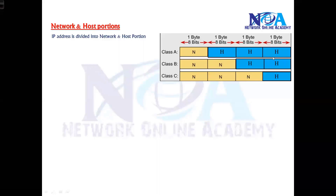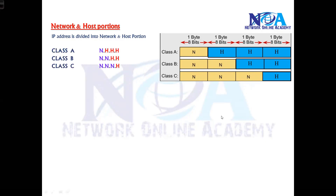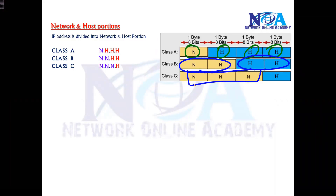As discussed in the previous topics, the IP address is divided into four portions, and each portion is a group of 8 bits. These four portions are again divided into network and host portions. In Class A, there is one network portion and three host portions. In Class B, there are two network portions and two host portions. In Class C, there are three network portions and one host portion.